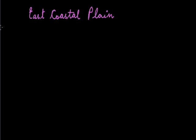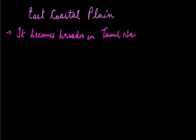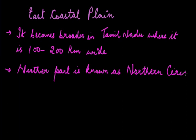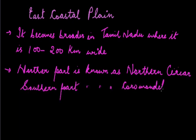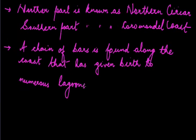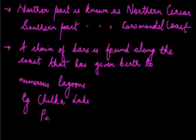Key features of the Eastern Coastal Plain: it becomes broader in Tamil Nadu where it is 100 to 200 km wide. It has two parts — the northern part is known as the Northern Sarkar, and the southern part is known as the Coromandel Coast. A chain of bars found along the coast has given birth to numerous lagoons, for example the Chilka lake in Orissa and the Pulikat lake in Andhra Pradesh.